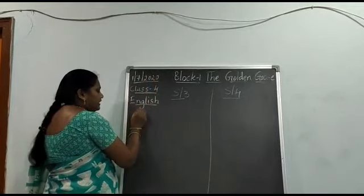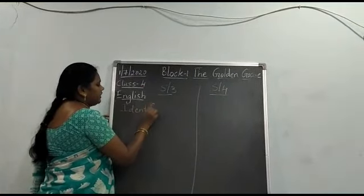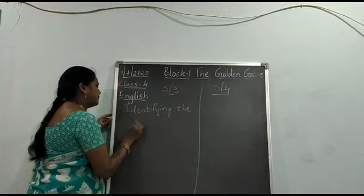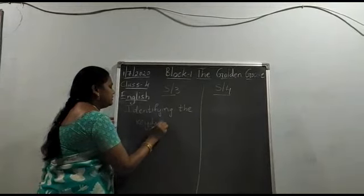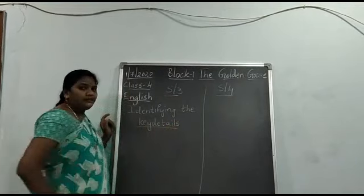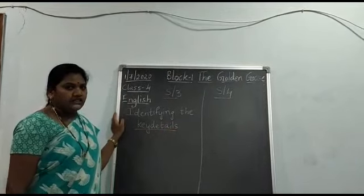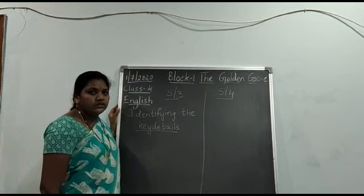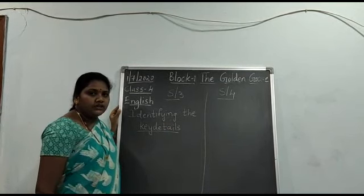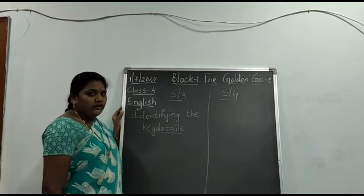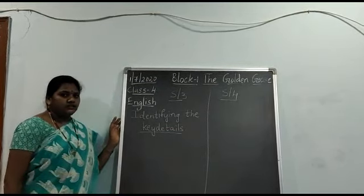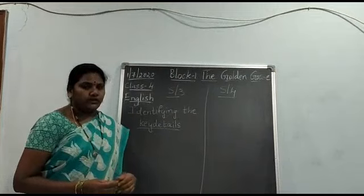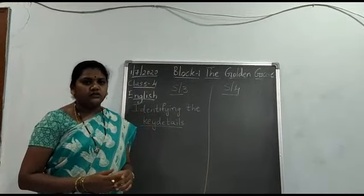Our topic is identifying the key details. Let me explain you the meaning of key details. Key details means it gives the important information about the story. In the first paragraph, what are our main key details — we will see now. Open your reader children. We are going to read the paragraph and then we are going to start.